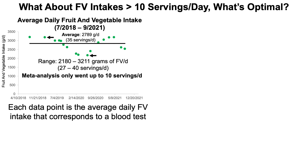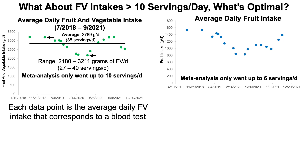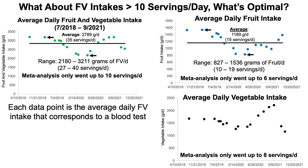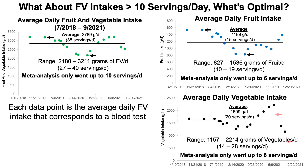How does this 35 servings per day break down into fruit and vegetable intake, just as in the meta-analysis? My average daily fruit intake over that three-plus year period is 15 servings per day, with a low end of 10 and a high end of 19 servings per day — still greater than the meta-analysis. Since 35 total minus 15 from fruit, my average daily vegetable intake is 20 servings per day, with a low of 14 and a high of 28 servings per day — again higher than the meta-analysis data.